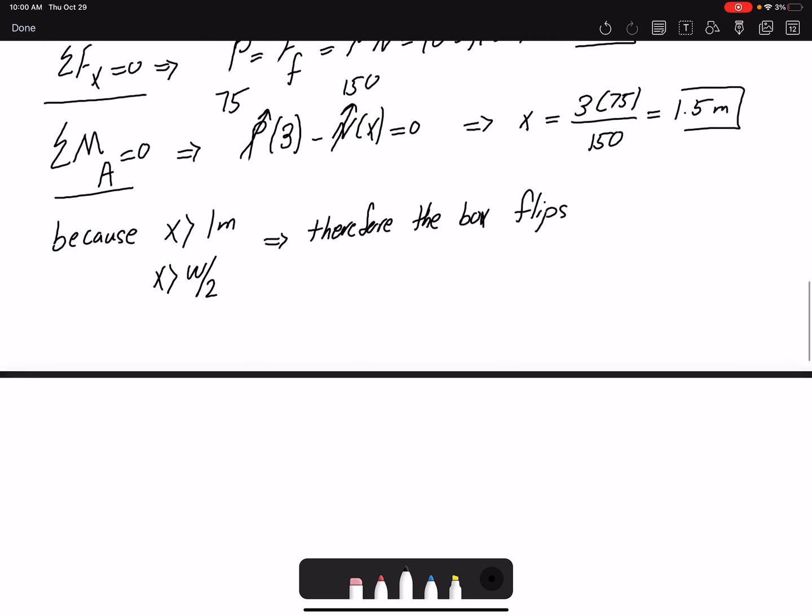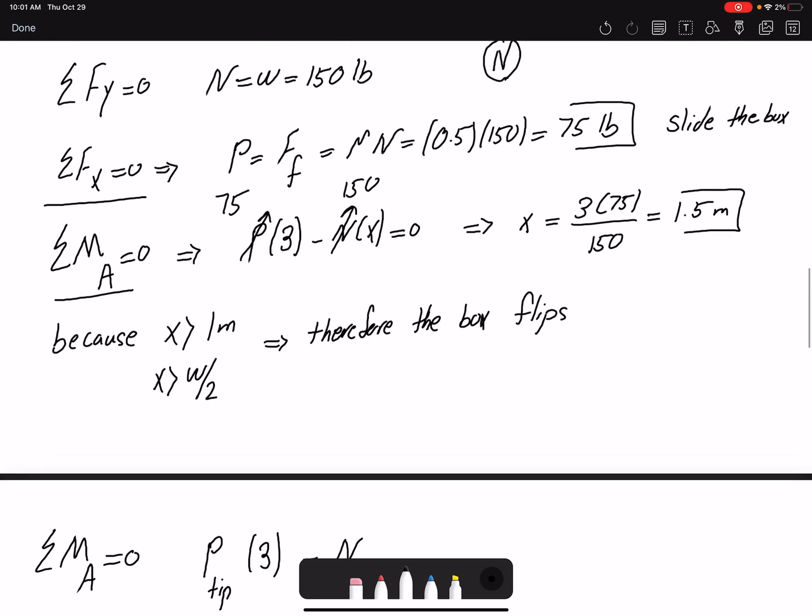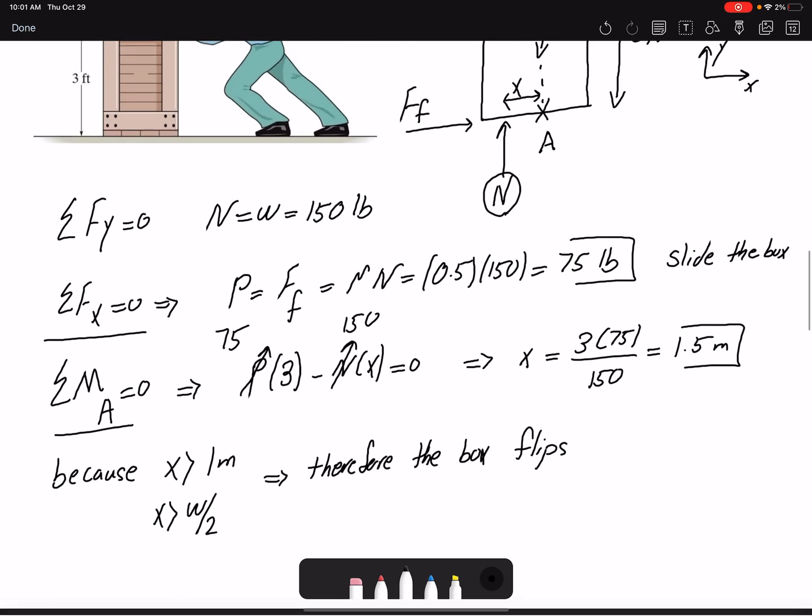Summation of moment about point A equals zero, but here we don't have the force. We're going to find the force that it takes for our box to tip. So we have P, I'm going to call this P_tip, the force that it takes to tip the box. The moment arm is the same, minus N.